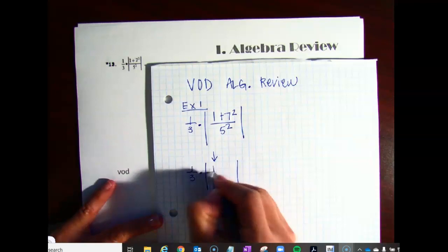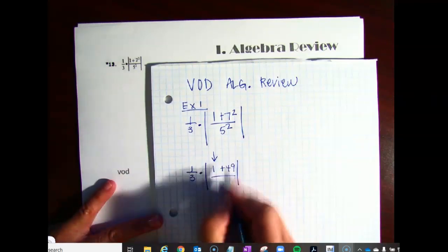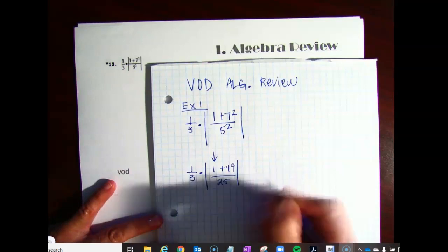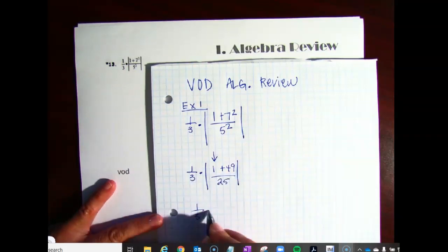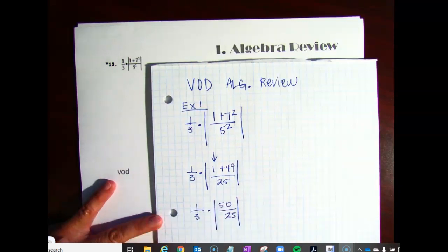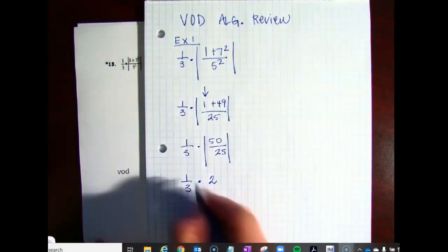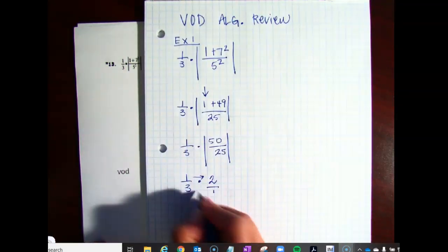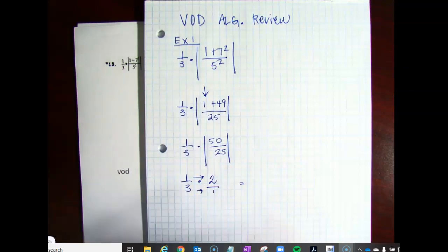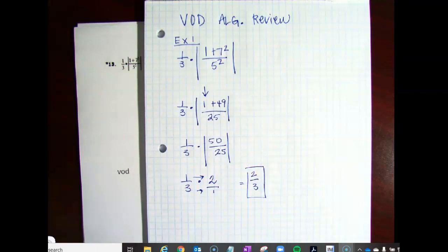This is going to be 1 plus 49, because of course 7 squared is 49, over 5 squared. And that is going to turn into something that looks like this. And 50 over 25, of course, is just 2. And remember, when you multiply fractions, you multiply straight across. Remember, a whole number is like over 1. So the answer for number 1 on your key says 2 thirds. And that's how we are going to get that problem.